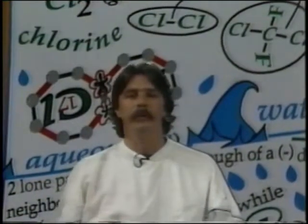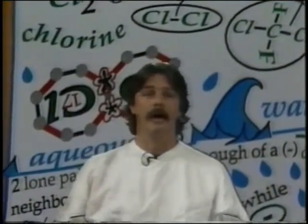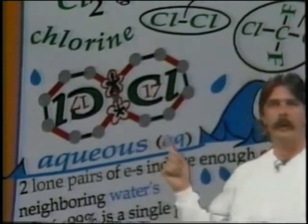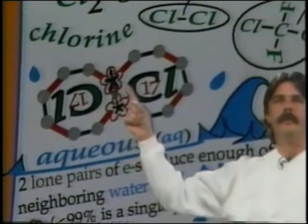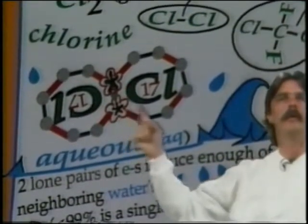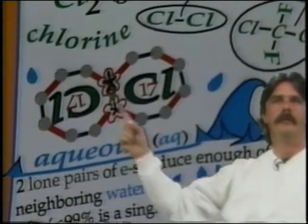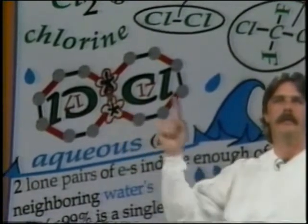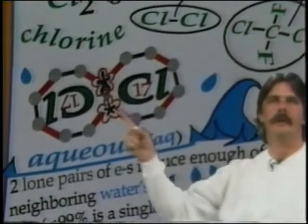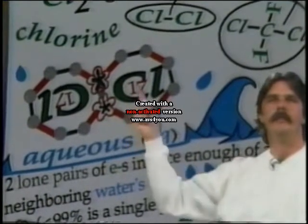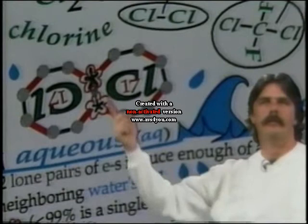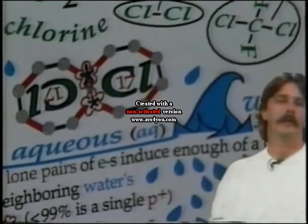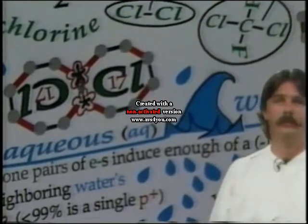An example of covalent bonding is one of the diatomics — 'di' meaning two. Two chlorine atoms get together, both needing one more electron for their octet. By sharing their electron pair, each chlorine goes from seven to eight electrons, so they both end up having their octets filled with a shared electron pair between them. That's why chlorine gas is Cl2.